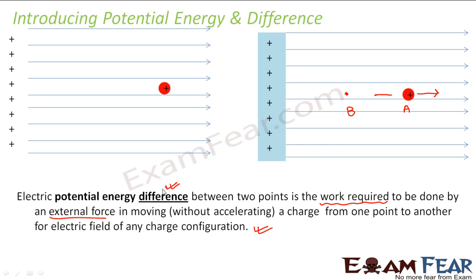Potential energy difference means it is the difference between the potential energy at this point and the potential energy at that point. Now there is one other important term which I never discussed before: without accelerating. Why am I saying without accelerating? Just think of this situation — there is a charged particle.